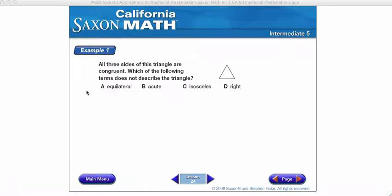So here we have example one. All three sides of this triangle are congruent. And we know that congruent means the same size and shape. So therefore, all three sides are the same length. So which of the following terms does not describe the triangle? Well, if all three sides are the same length, then it is an equilateral triangle, because equilateral means that they are equal.